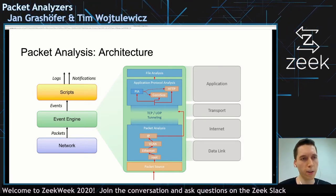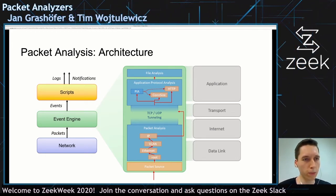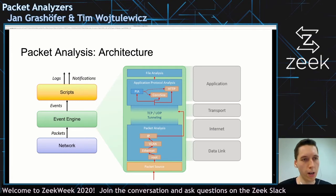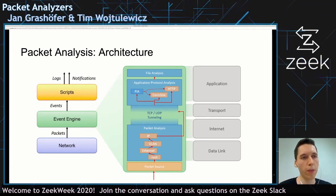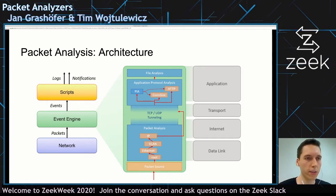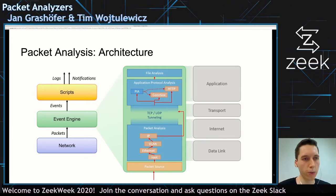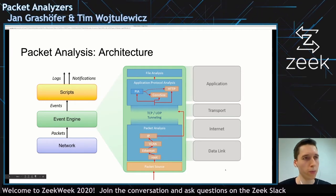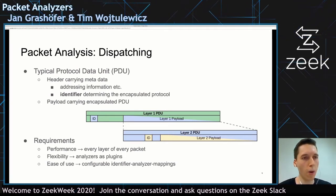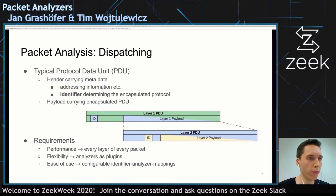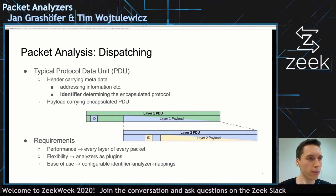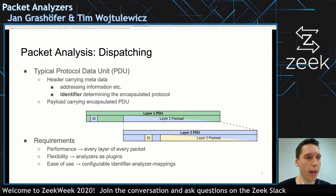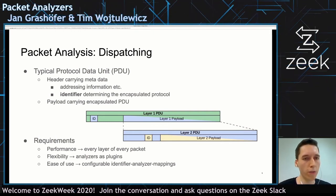There's a bit of a blurry area here — while we are in the process of getting IP turned into a packet analyzer, further on the roadmap there's everything concerned with sessions: TCP and UDP. So if you look at the current master branch, you won't see anything that goes beyond IP. Now let's have a look at how the packet analyzers actually work. If you have a look at these low-level protocols, the typical protocol data units (PDU) consist of a header and a payload carrying a PDU of an encapsulated protocol.